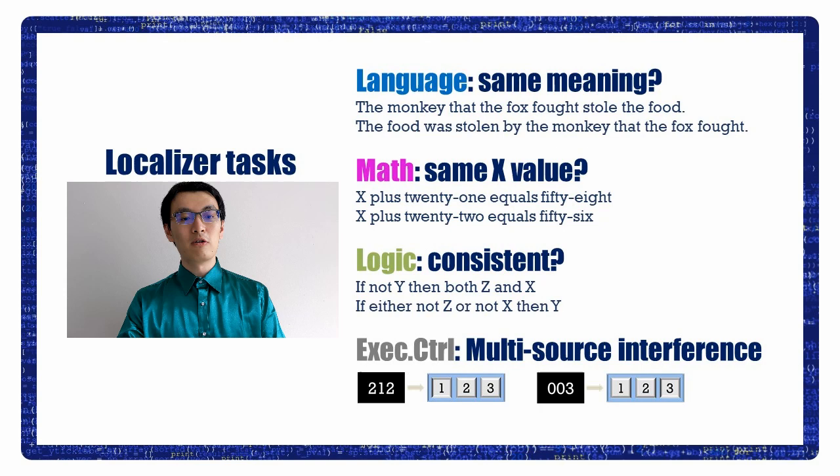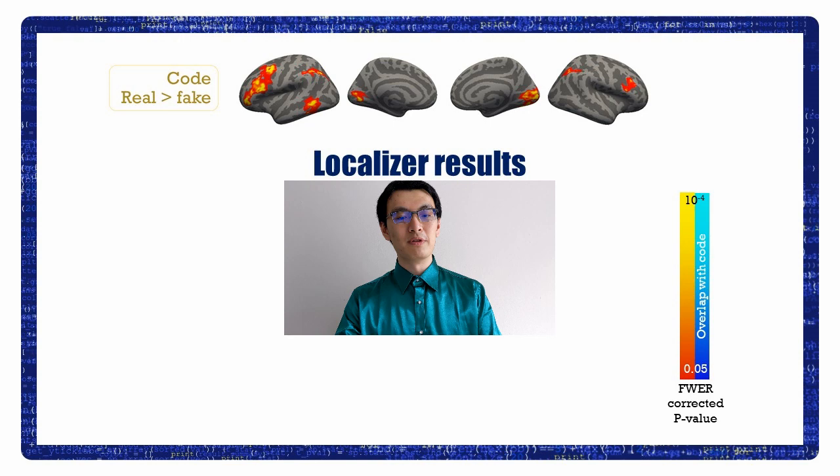To probe the executive control system, the participants did the Multi-Source Interference Task, or MSIT. In this task, an incongruence exists between the value of a digit and its position in a digit triplet, and the incongruence required executive control to resolve.